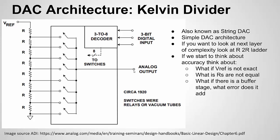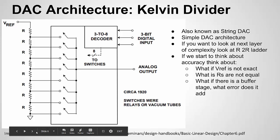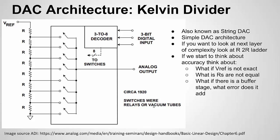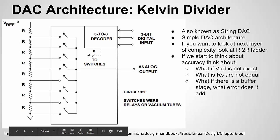To address loading issues, you add an op-amp buffer after the output — it has a high-impedance input and low-impedance output, so it can source more current to the load. Accuracy is affected by several factors: if V-ref is not exact, that error propagates to all outputs; if the resistors are mismatched, you get nonlinearity; if the buffer amplifier has offset error, that adds inaccuracy. This diagram comes from Analog Devices' reference handbook on ADCs and DACs, which I'll link in the video description.